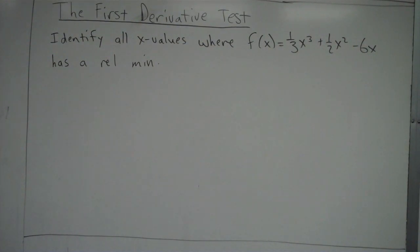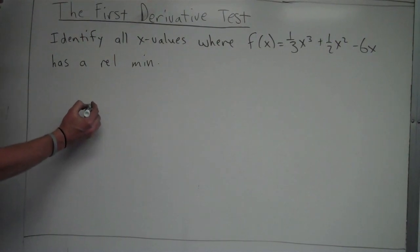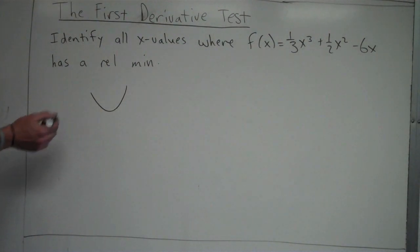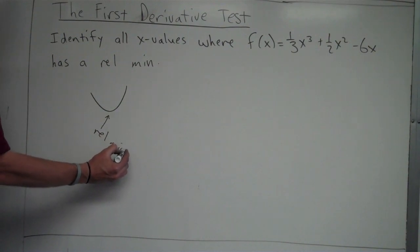So in an earlier video, we found out that f has a relative minimum when f prime changes from negative to positive. Just a brief refresher on that if you didn't catch that or if you don't remember. Let's take a quick look right here. So this is an example of just a quick sketch of a graph. So at the bottom of this graph right here, there would be a relative minimum right there.